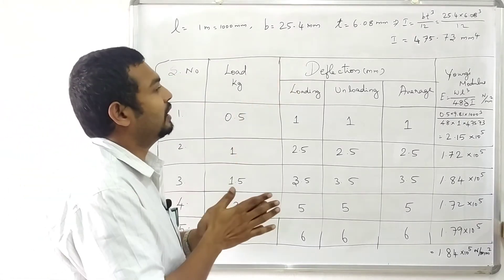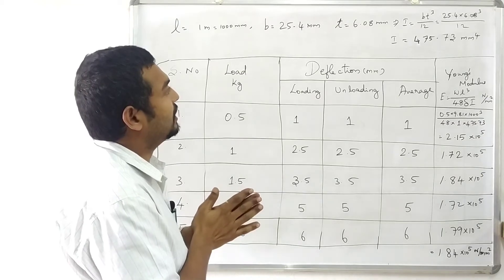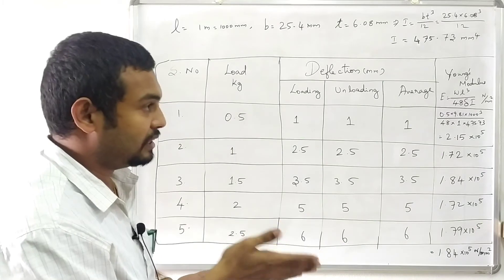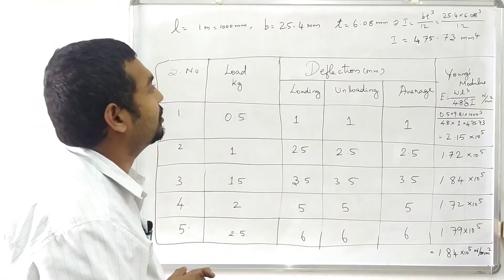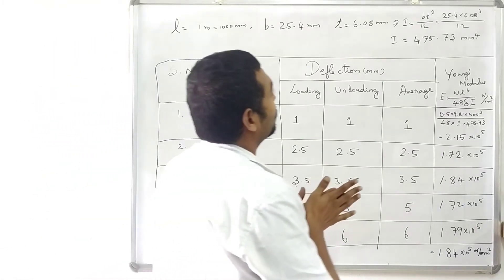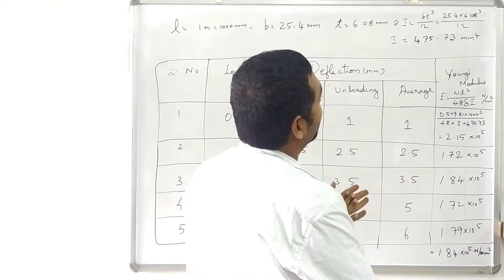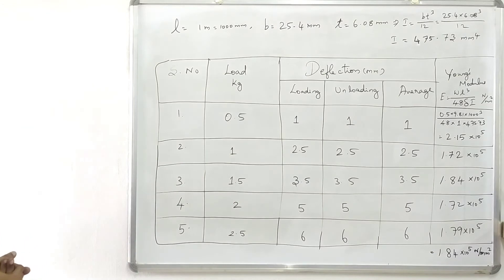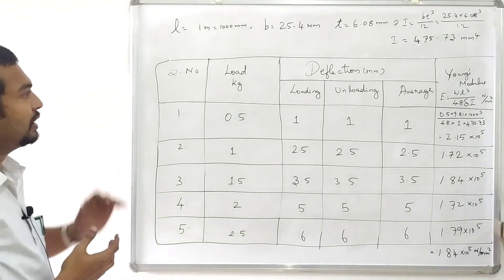For that moment of inertia, bt cubed by 12. Bending section, moment of inertia is bt cubed by 12. 25.4 into 6.08 cube by 12, that is 475.73 mm power 4. That is the moment of inertia.